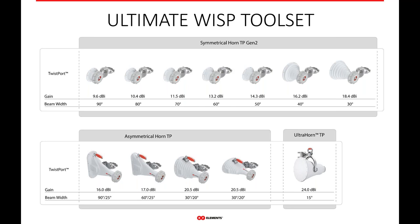RF Elements offers the ultimate tool set for WISPs when it comes to horns. Nobody else offers the full gamut of symmetrical and asymmetrical antennas in all the different beam angles and gains available today — including our ultra horn, which is really the best sector antenna on the market. It's very narrow at 15 degrees, but that 24 dBi of gain and 99% beam efficiency is just outstanding. Anybody who's used the ultra horn as a sector antenna knows it's pretty kick-ass.